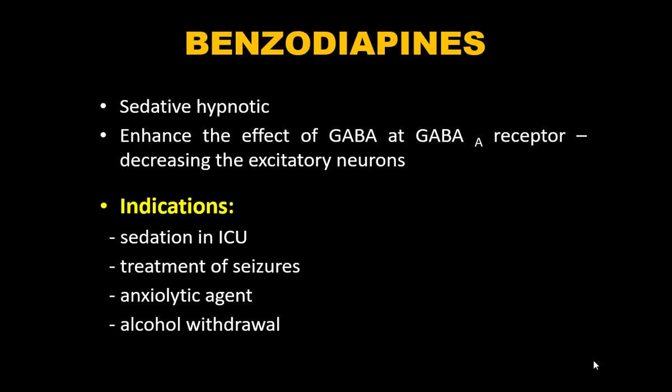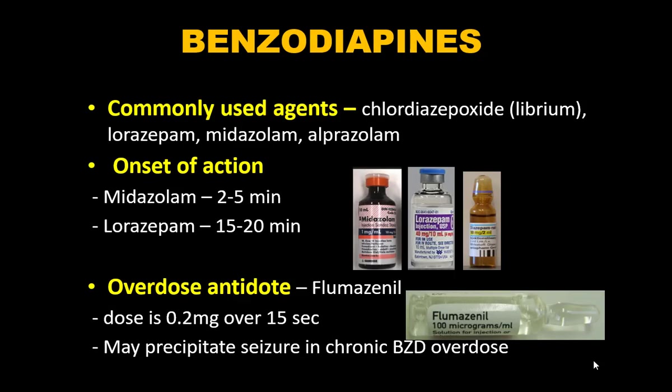Benzodiazepines are sedative-hypnotics that enhance GABA at GABA receptors, decreasing excitatory neuron activity. Indications: ICU sedation, treatment of seizures, anxiolytic use, and alcohol withdrawal. Commonly used benzodiazepines include chlordiazepoxide (Librium), lorazepam, midazolam, and alprazolam. When treating delirium tremens or alcohol withdrawal, first check LFTs — Librium is long-acting and the patient may be sedated for 24–48 hours.